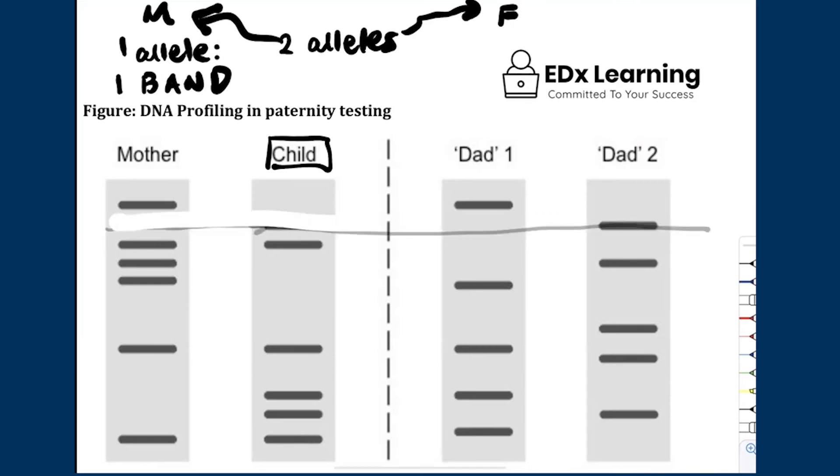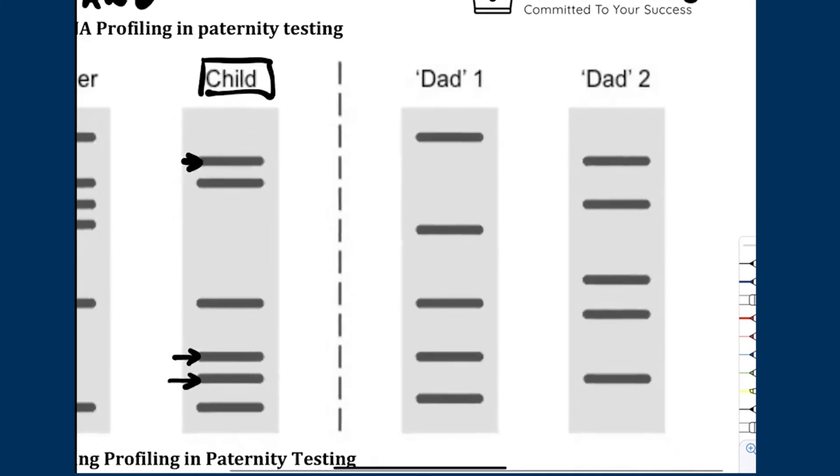So the way I approach these questions, everyone: the first thing I do is identify all the bands that the mother did not pass onto the child. We see a band here. This band could have come from the mother, so we're not going to think about that band. What about these two bands, everyone? Yeah.